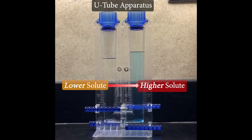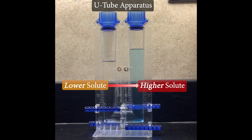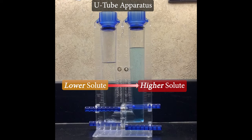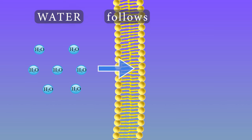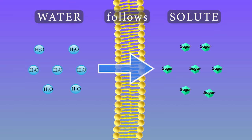In our experiment, water moved toward the area with the higher solute concentration. Here's an easy way to remember the direction that water will flow during osmosis. Water follows solute. If you can remember that, you're basically all set.